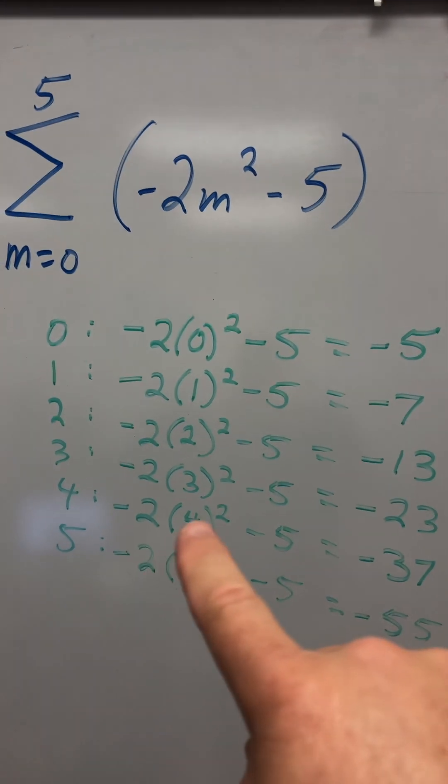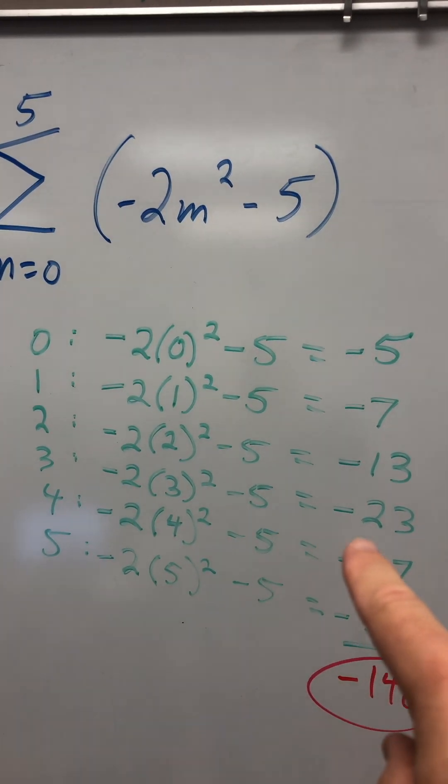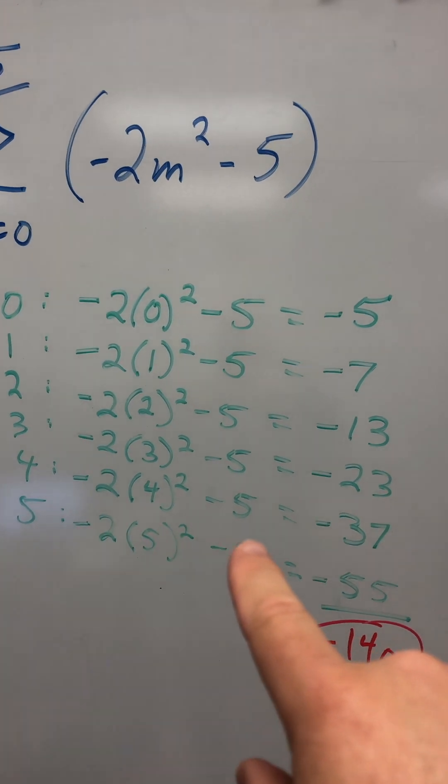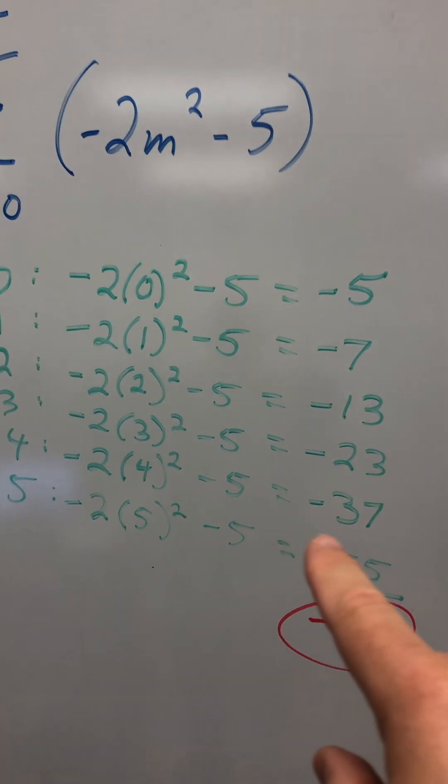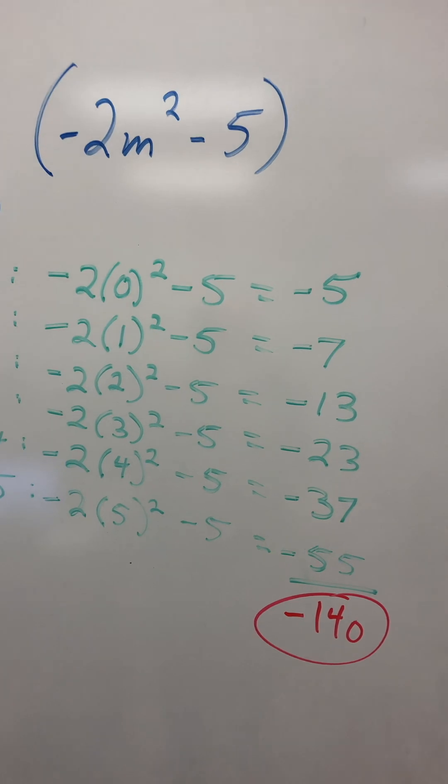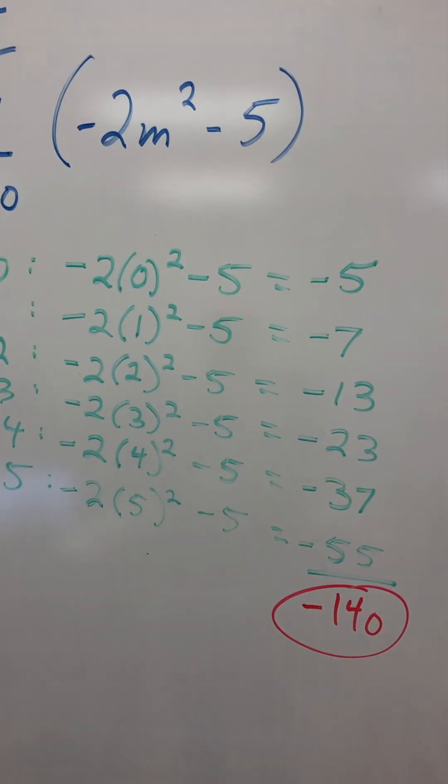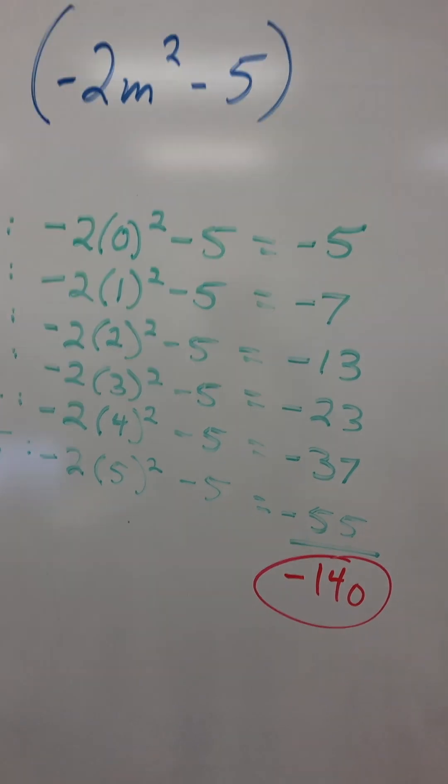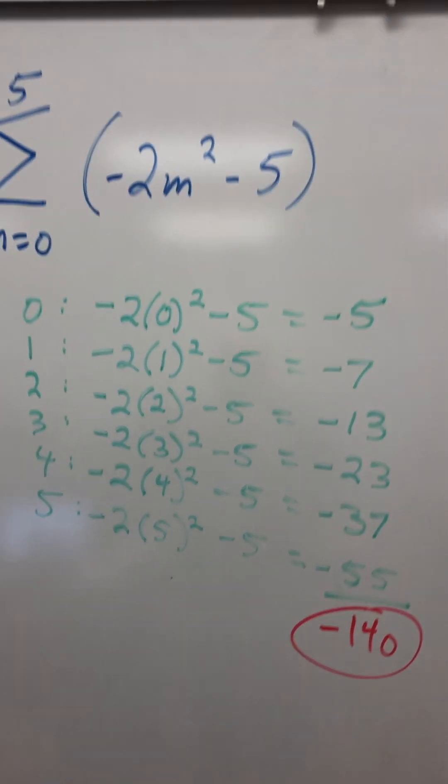Negative two times four squared minus five is negative 37. Negative 2 times 5 squared minus 5. Negative 55. And together you get negative 140. There you go.